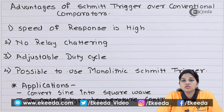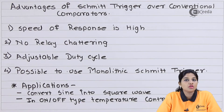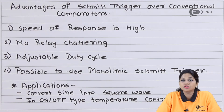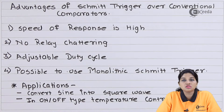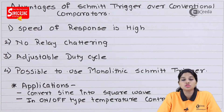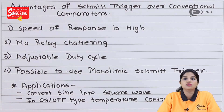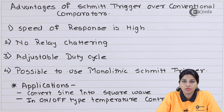We know that a comparator is a circuit which uses an op-amp in open loop configuration. It provides output which is either at the positive or negative saturation level depending upon the comparison between two input signals. Schmidt trigger is considered as one of the applications of a comparator, but it uses positive feedback — meaning the feedback is applied to the non-inverting terminal of the op-amp.